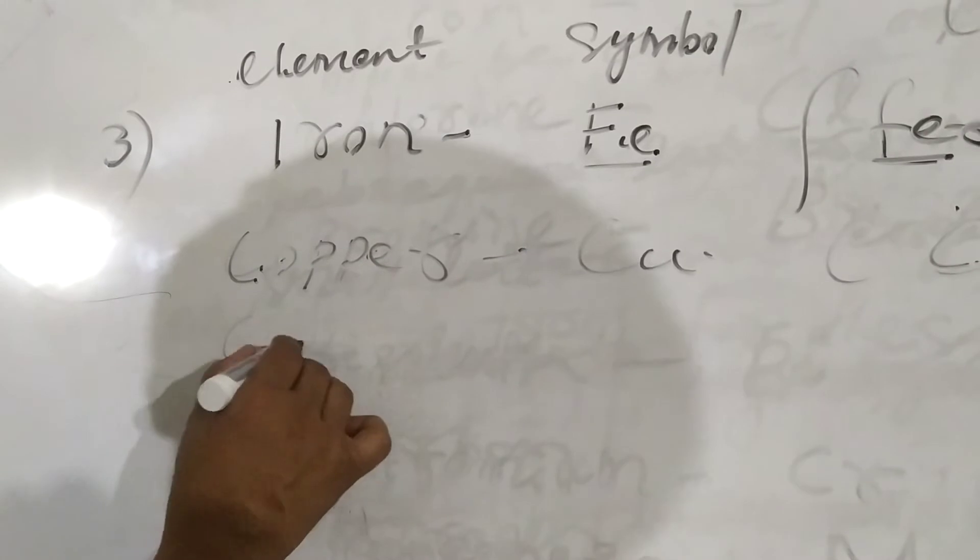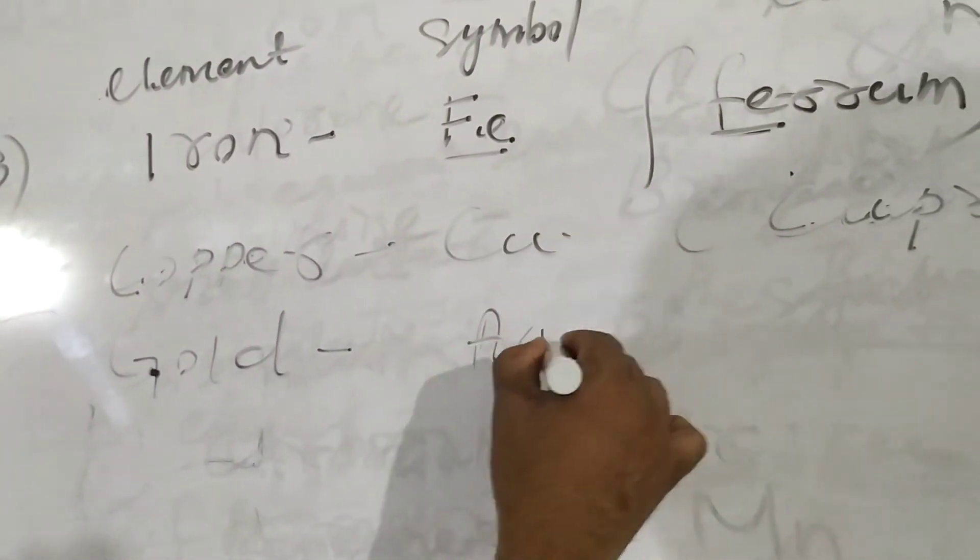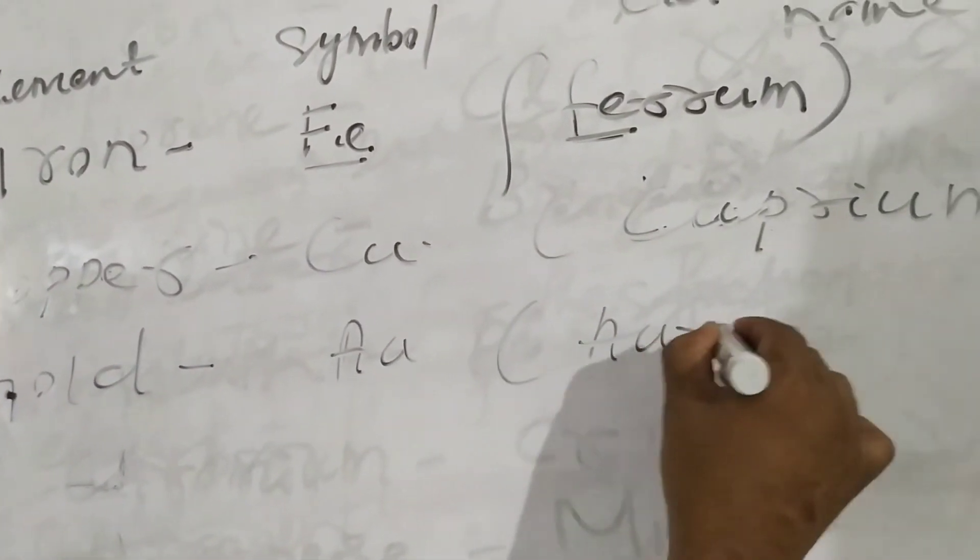And that is Gold. A U. Aurum. A, U, R, U, M.